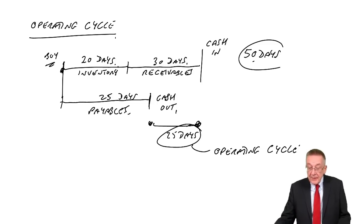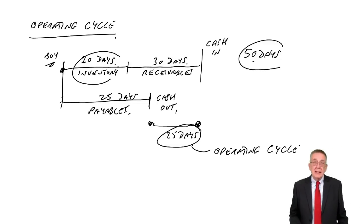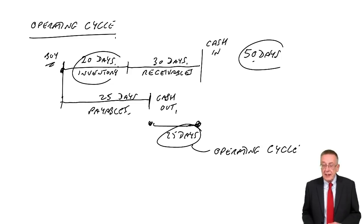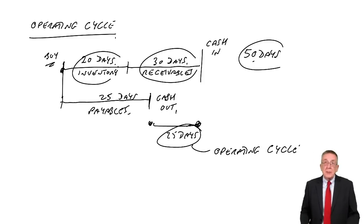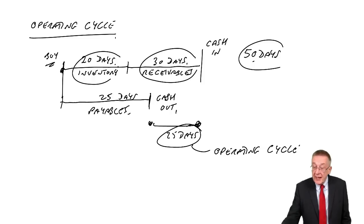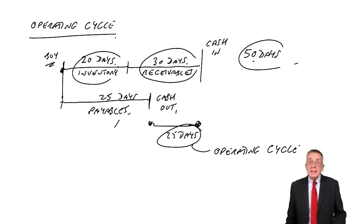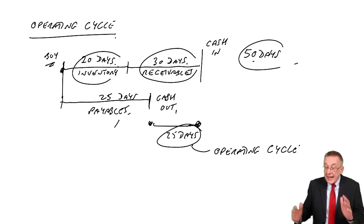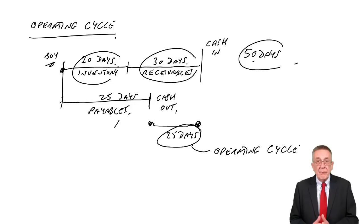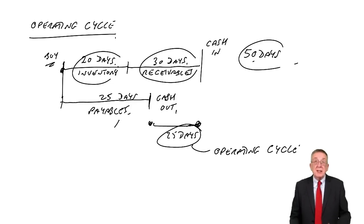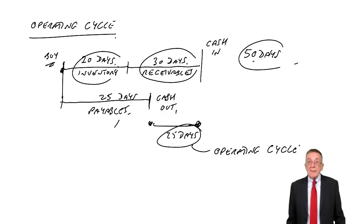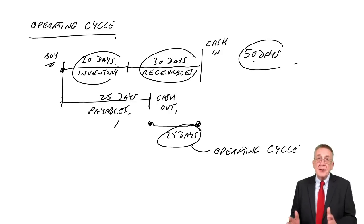Any business would want to keep the operating cycle as short as possible. They can shorten it by holding less inventory, by getting receivables to pay faster so cash comes in sooner, or by taking longer credit from suppliers. The operating cycle is an overall measure of how long the business is without cash, and each aspect will be looked at separately in later chapters.